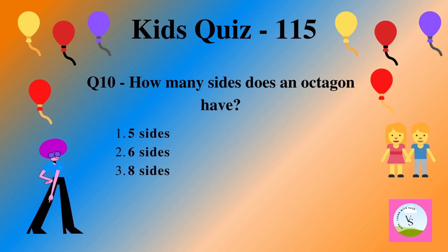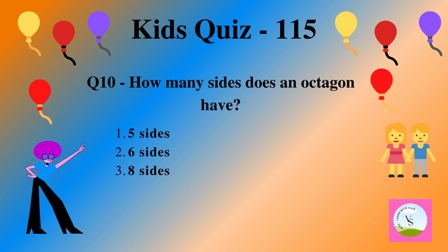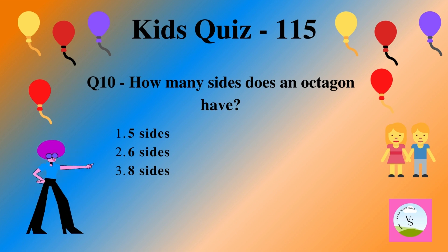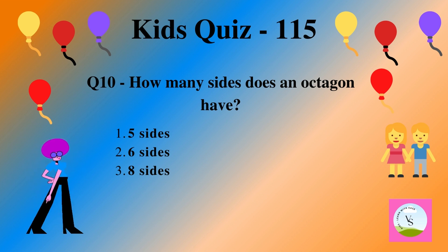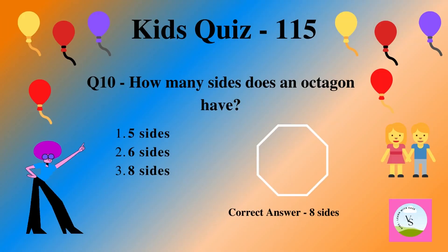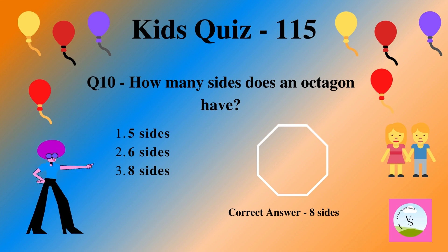Question 10. How many sides does an octagon have? 1. 5 sides, 2. 6 sides, 3. 8 sides. And the correct answer is 8 sides.